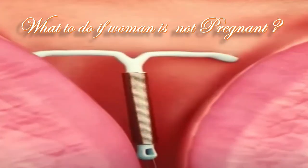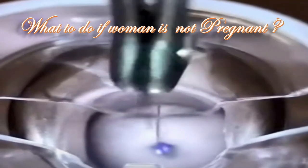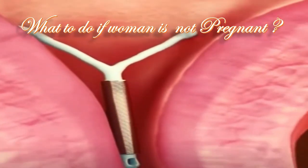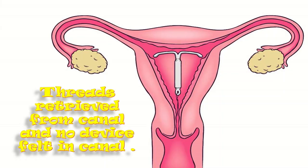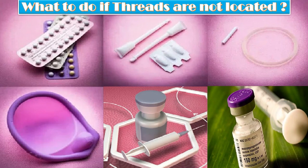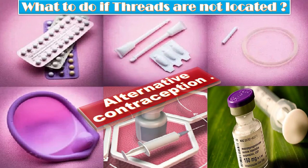What to do if the woman is not pregnant? Explore the cervical canal with a narrow artery forcep or an Emmet thread retriever. If threads are retrieved from the canal and no device is felt in the canal, no further action is needed if the patient is asymptomatic, as the IUCD might still be in the uterus.